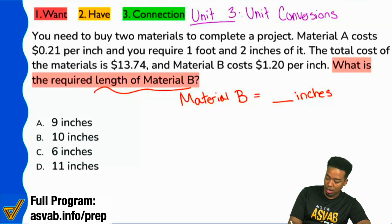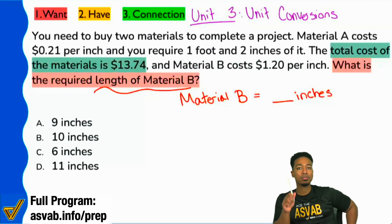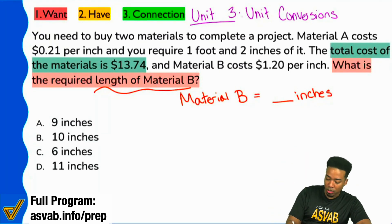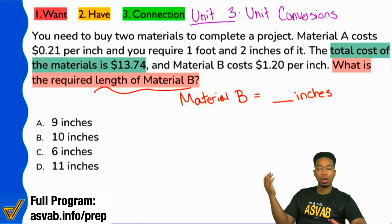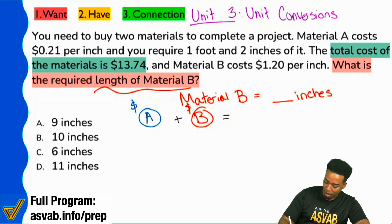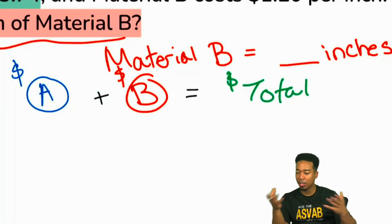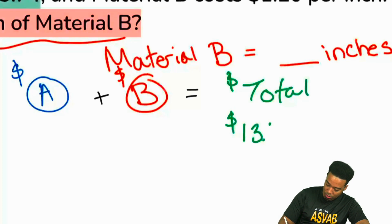Now let me show you how we can simplify this process using things that you already know. Watch this, everybody. Here's something that I know we can all understand. The total cost of the materials is $13.74. My party people, yes or no, is it true that if we're trying to find the total cost we can just say material A plus material B? So basically, the cost of material A plus the cost of material B is going to equal that total cost of $13.74. Is that true? Great.